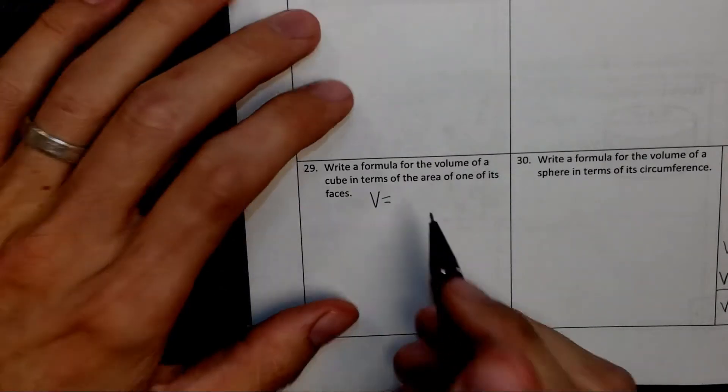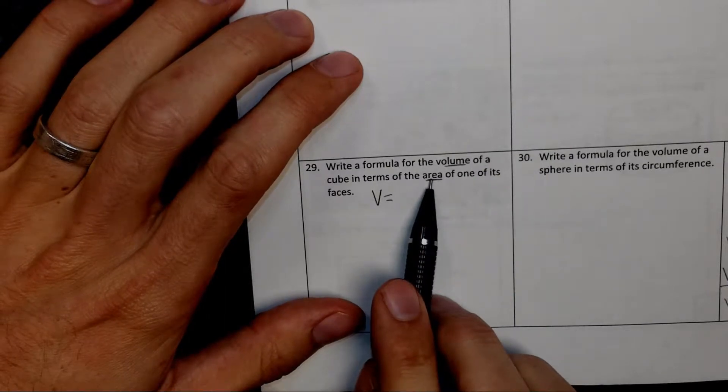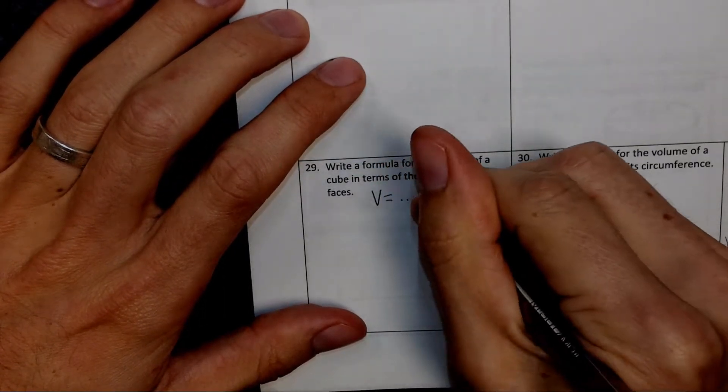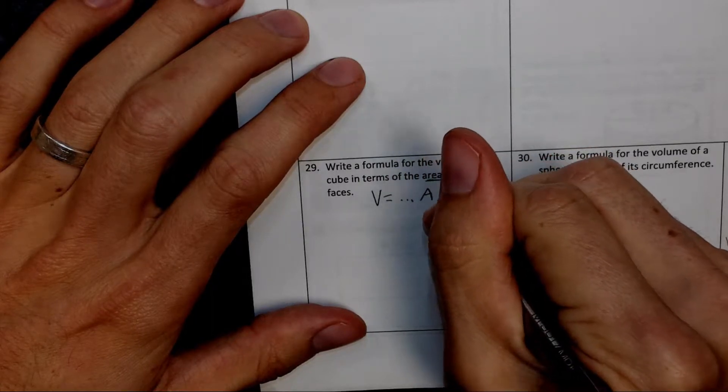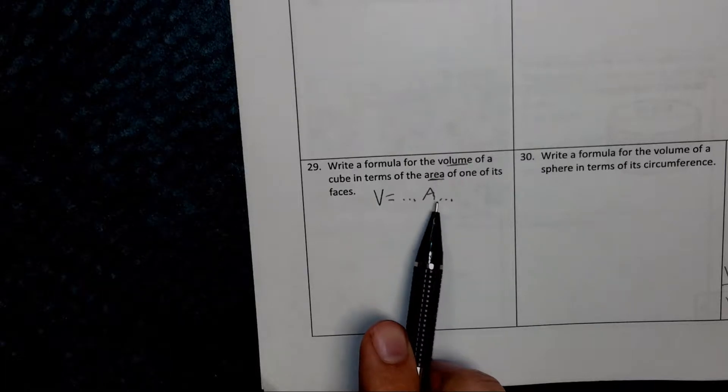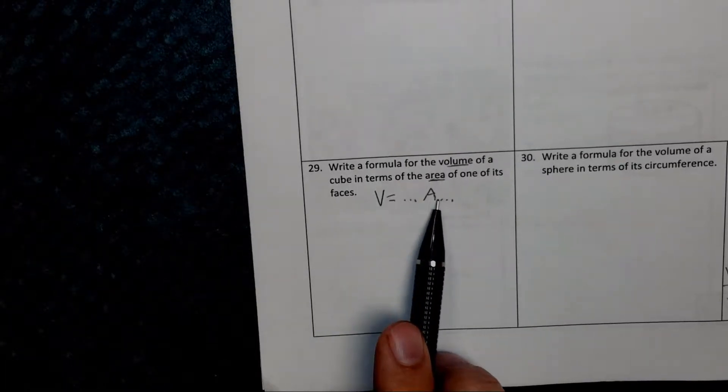So the variable that should show up in our equation is area. So in other words, we're going to have some stuff on this side, and the variable that's going to show up there is area. So we want a formula for the volume in terms of the area.